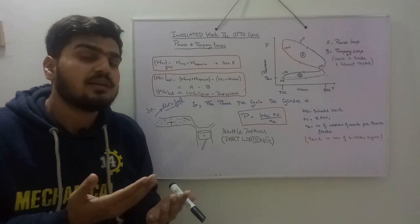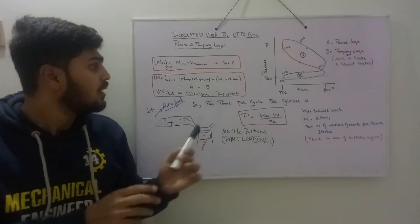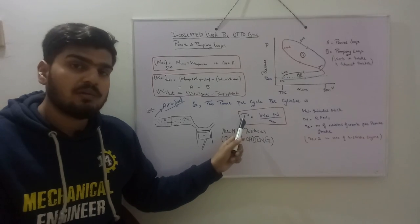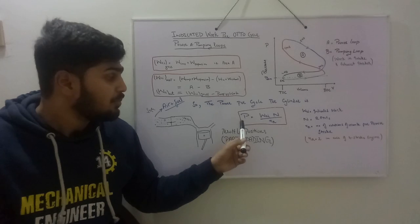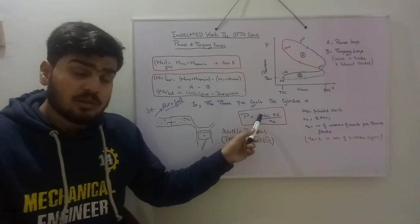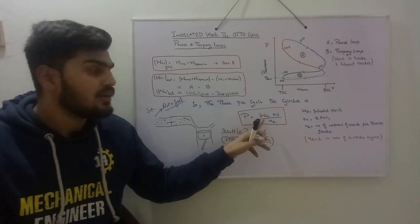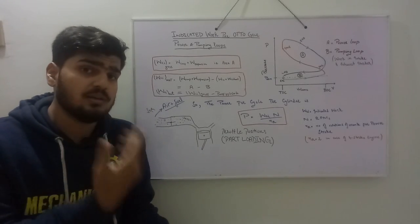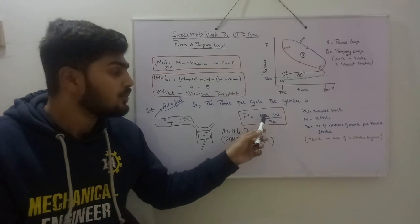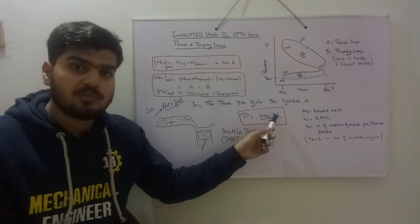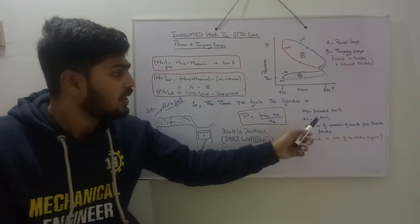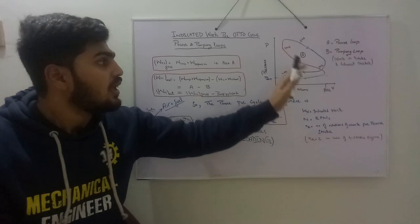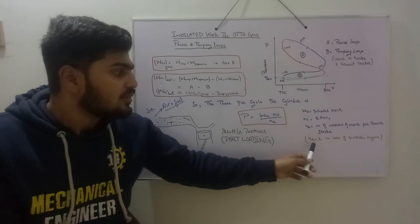The indicated work is directly proportional to the power produced by the engine. The power of the engine equals the indicated work per cycle — either gross or net depending on the calculation level — multiplied by the engine RPM, divided by the nr factor. The nr factor is the number of crank rotations per power stroke. For a four-stroke engine, nr equals two.